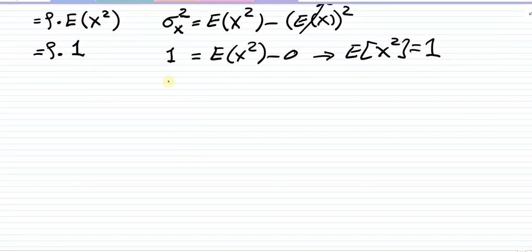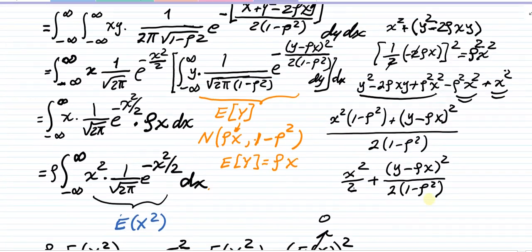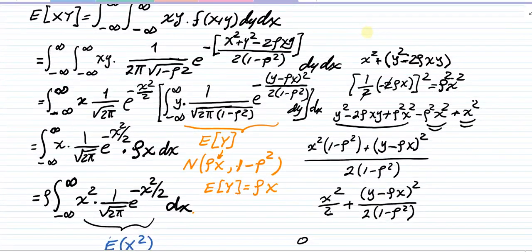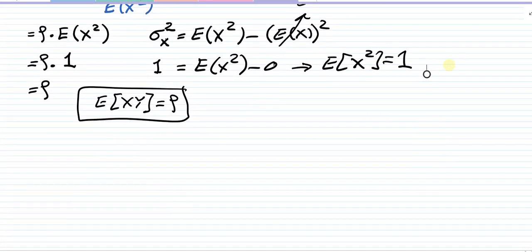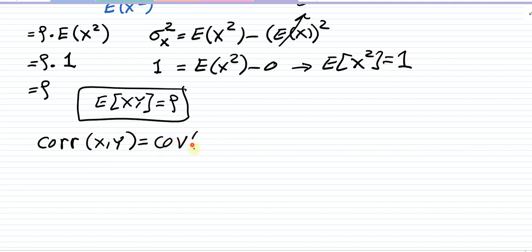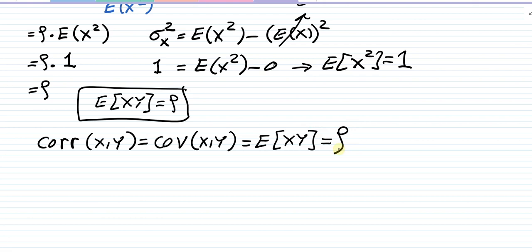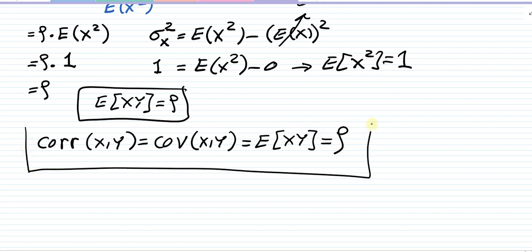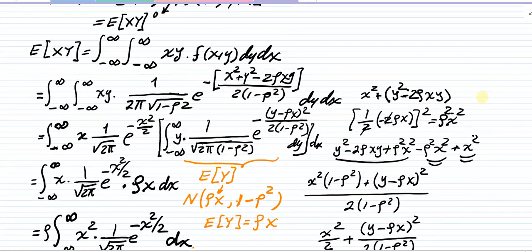So we've found that the expected value of XY equals ρ. Therefore the covariance of X and Y is ρ, and since we established that correlation equals covariance for the standard bivariate normal, the correlation is also ρ. This confirms that the parameter ρ in the standard bivariate normal distribution is both the covariance and the correlation of the two variables. With that, we're done.